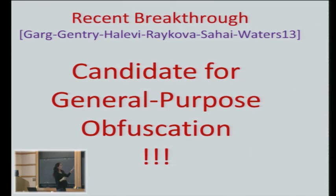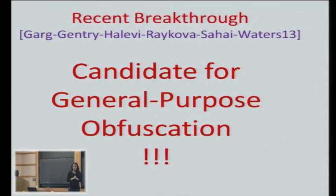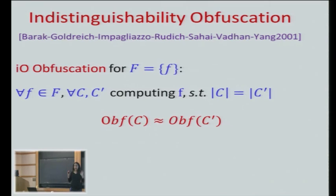That was the state of affairs until very recently. But then, a few months ago, there's been a really beautiful breakthrough work of Garg et al. that gave a candidate for general-purpose obfuscation. They say: give me any code, and here's a way to obfuscate it. They gave a construction. Now, they can't claim it's always a good obfuscation because we know there are some functions you cannot obfuscate. So what they said is that it achieves an indistinguishability-type definition — and that was their assumption: here's a candidate, and we assume that it's an indistinguishable obfuscator.